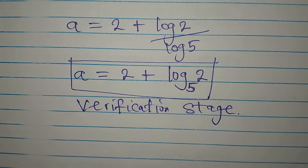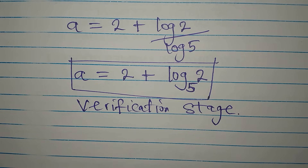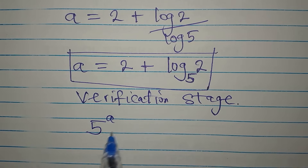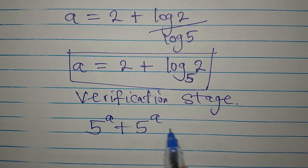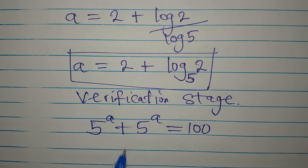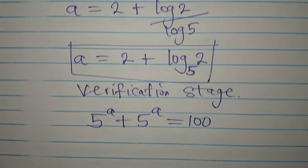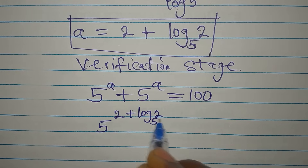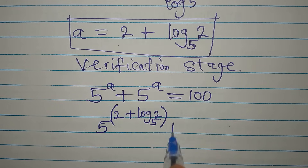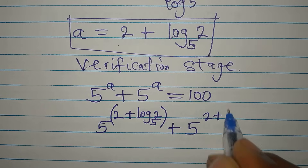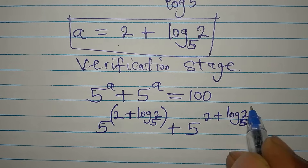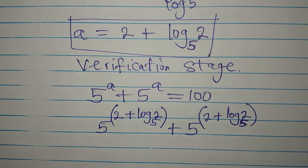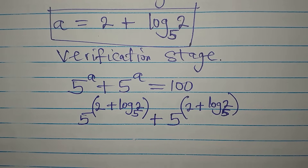During the verification stage you'll learn one or two additional things, so stay back. The original equation is 5^a + 5^a = 100. In place of a, I'm going to substitute 2 plus log 2 to base 5. So we have 5 to the power of (2 + log₅2) plus 5 to the power of (2 + log₅2). If we simplify and do not get 100, that means we didn't get the correct answer.